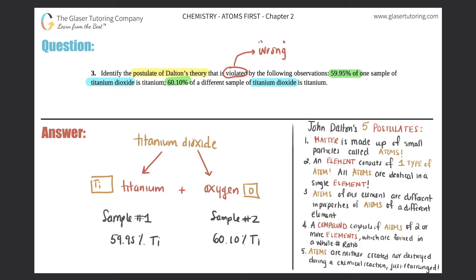Now it's all stemming from a compound. Titanium dioxide is a compound. And technically there's only one postulate that has to do with compounds, just compounds. Which one is it? Which one is the one that has to do with compounds?